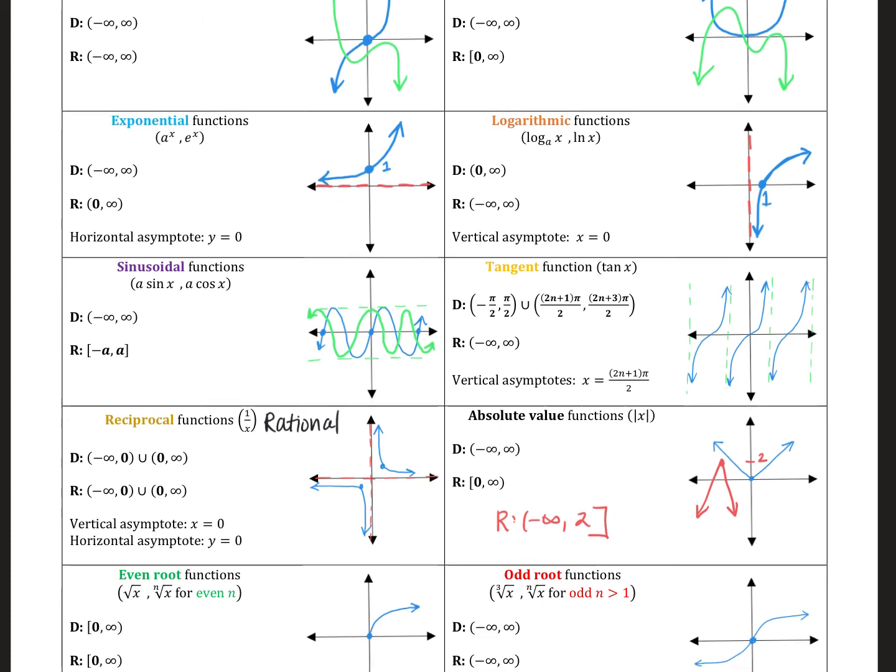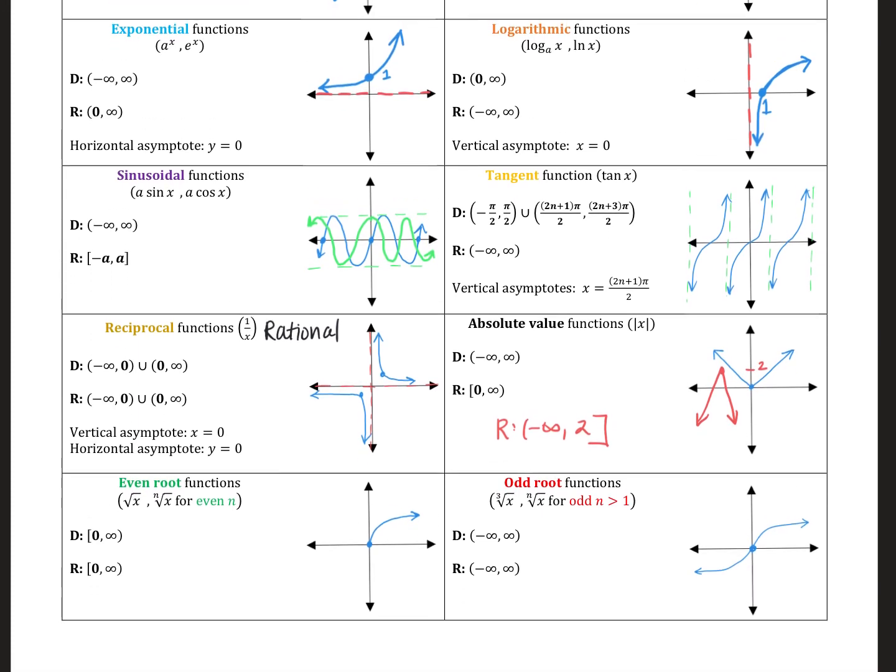And finally, we have our root functions. And even roots, such as the square root, the fourth root, the sixth root, the eighth root. We can only take roots of non-negative numbers, meaning 0 and positive numbers, to get out real values. So it looks like this. It's kind of half of a parabola.